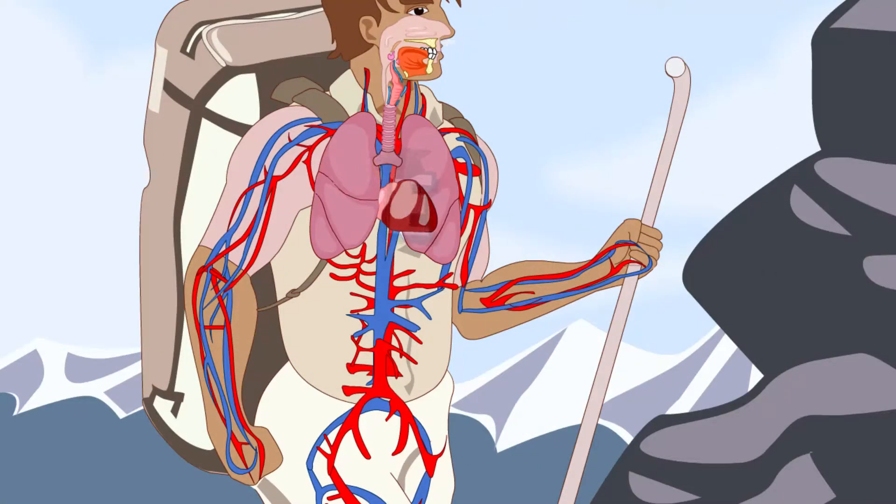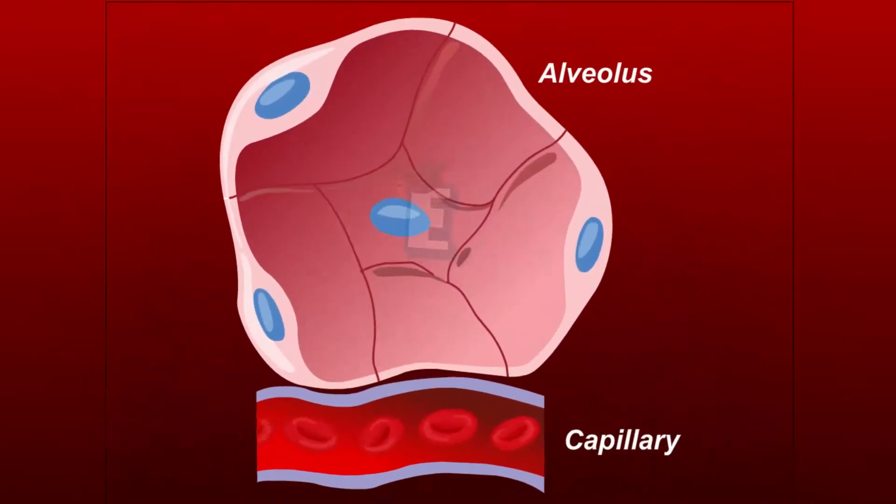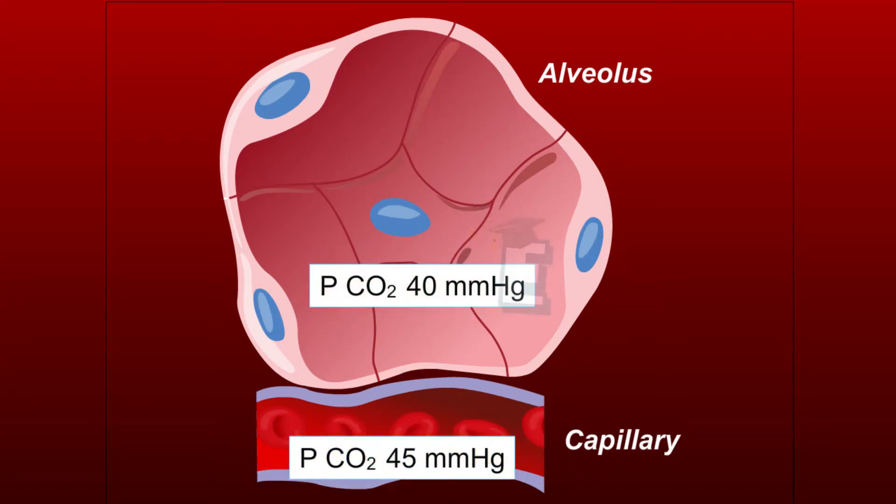The carbon dioxide also diffuses, but the direction is different. It is from the blood vessel to the alveolus. This happens because the carbon dioxide pressure in the blood vessel is 45 millimeters of mercury, higher than the pressure in the lungs, which is 40 millimeters of mercury.